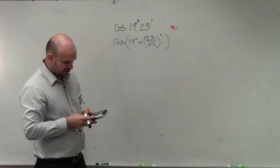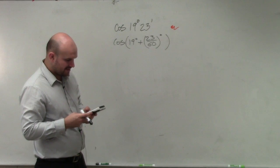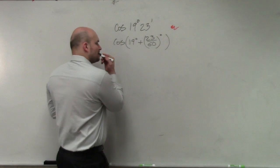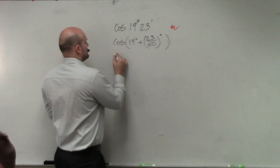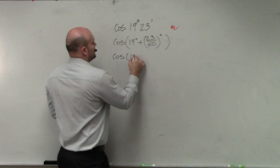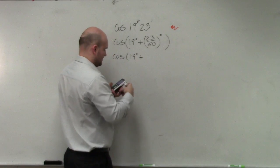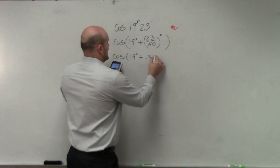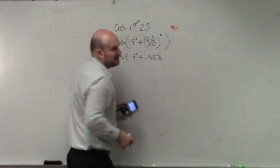So just in my calculator, I'll just do 23 divided by 60. And I get a decimal. So that's cosine of 19 degrees plus 0.383 repeating.